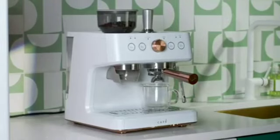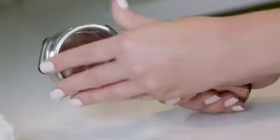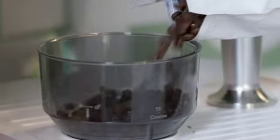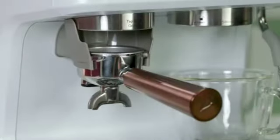Place a container under the dispenser before using the single or double function. Push either the single shot or double shot filter into the portafilter. Make sure there are coffee beans in the bean hopper. Place the portafilter within the grinder cradle.